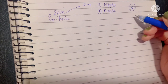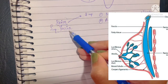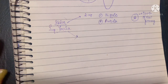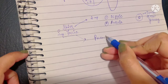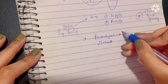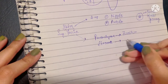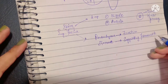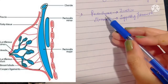The areola contains multiple sebaceous glands. Every organ in the body consists of two basic features: the parenchyma and the stroma. The parenchyma is the portion of tissue that performs the function, while the stroma is the part that forms the connective tissue or supporting framework. Similarly, the breast has both a parenchyma and a stroma.